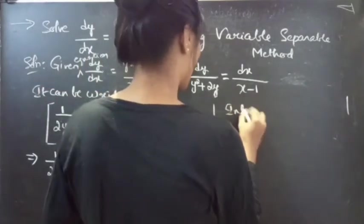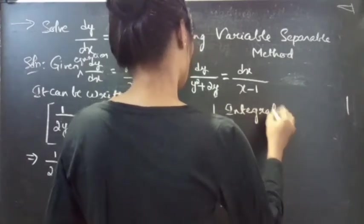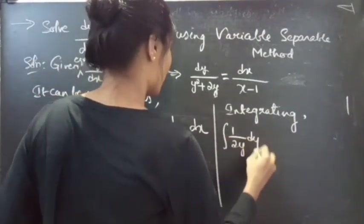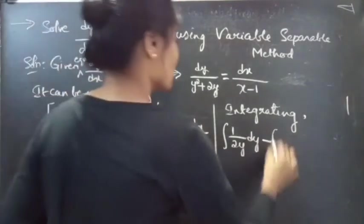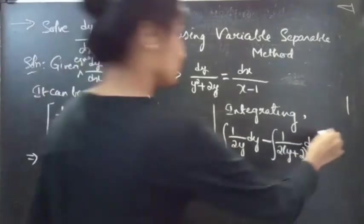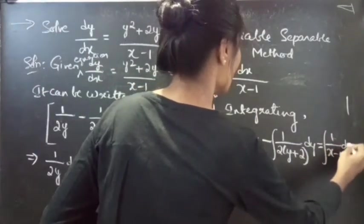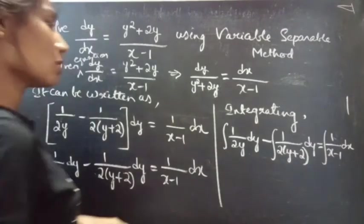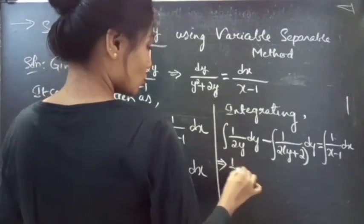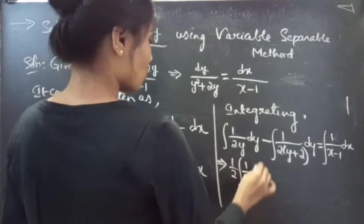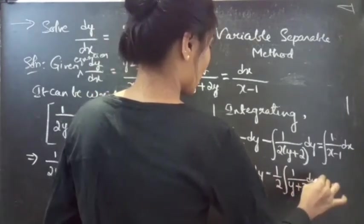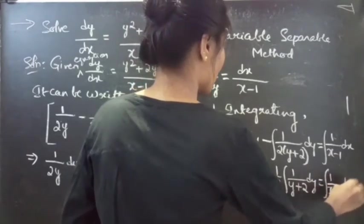Integrating both sides: ∫(1/(2y)) dy - ∫(1/(2(y+2))) dy = ∫(1/(x-1)) dx. We can take the constants outside: (1/2)∫(1/y) dy - (1/2)∫(1/(y+2)) dy = ∫(1/(x-1)) dx.